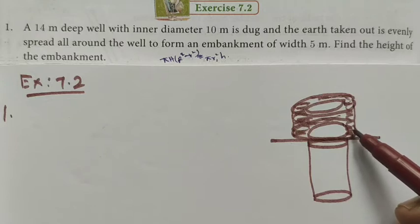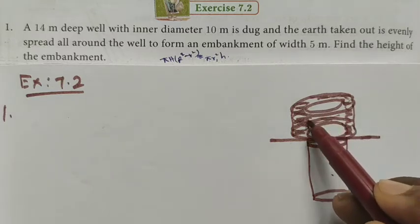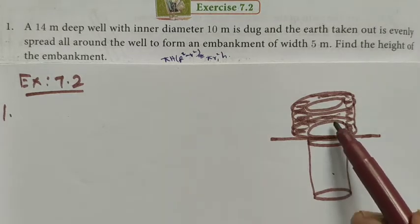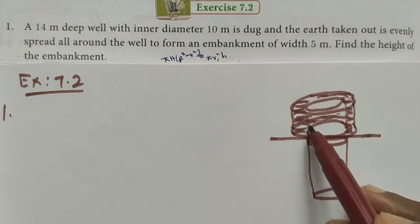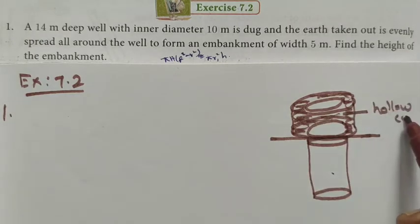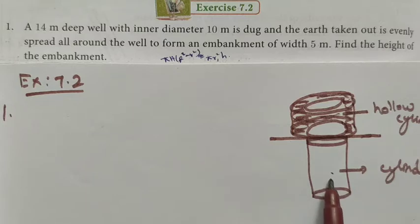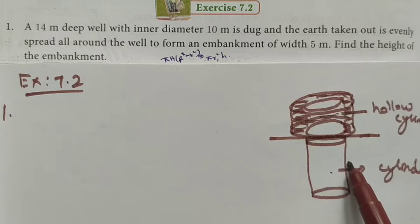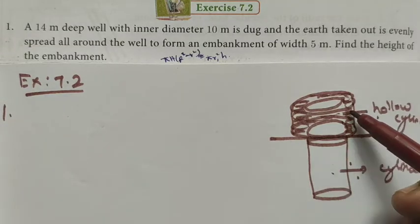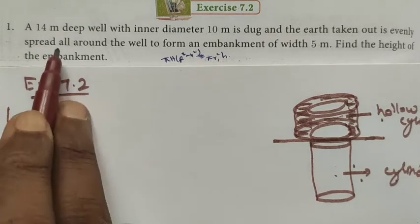This is below ground level and this is above ground level. The sand is dug out and placed here, so we get the embankment. When we go to villages we can see wells like this — the dug-out sand is spread all around above the well. The embankment is a hollow cylindrical shape, and the volume of the dug cylinder equals the volume of this hollow cylinder, because only the sand dug out from here is spread there.